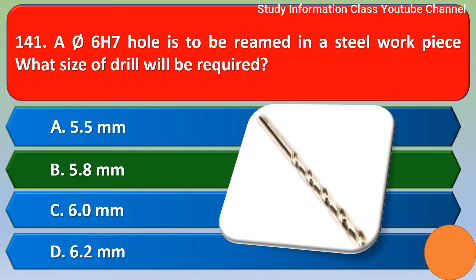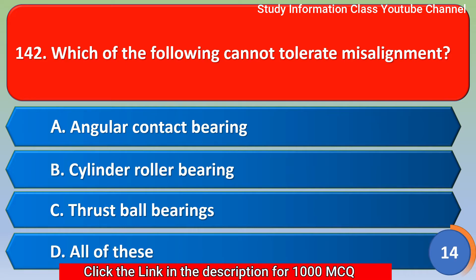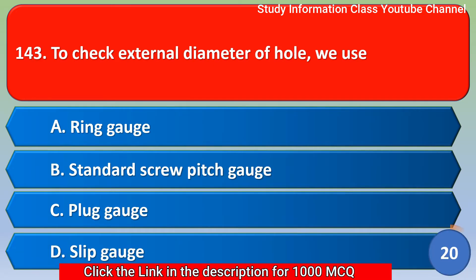Next question: Which of the following cannot tolerate misalignment? Option A: angular contact bearing, Option B: cylindrical roller bearing, Option C: thrust ball bearing, Option D: all of these. The correct answer is Option D, all of these.